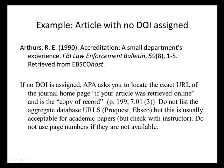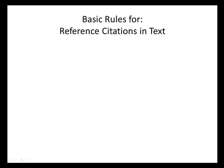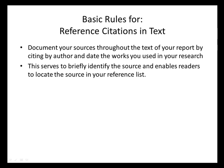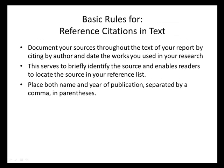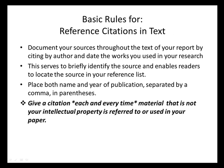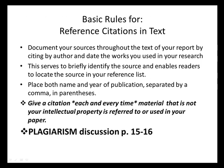APA Manual requests that you do not include the name of the aggregate database, but it might be acceptable for academic papers. Some basic rules for reference citations in the text of your manuscript: you need to think about doing this whenever you use intellectual property that is not your own. Use the author and date — this serves to briefly identify the source and enables readers to locate the primary source in the reference list. Place both the name and the year of publication separated by a comma in parentheses, and you need to give a citation each and every time that material is not your own.